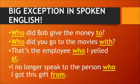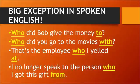For example, when speaking casually in everyday English, we would say these sentences like this: who did Bob give the money to? Who did you go to the movies with? That's the employee who I yelled at. I no longer speak to the person who I got this gift from. Even though it's not technically correct to end a sentence with a preposition, we still tend to do it in spoken English. Remember that the grammar rules of spoken English are a little more flexible.